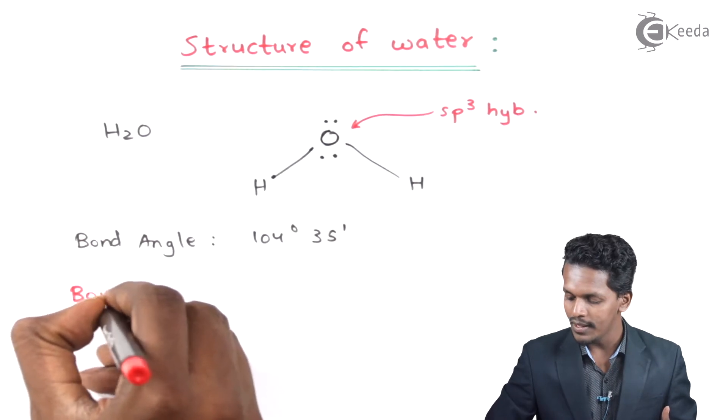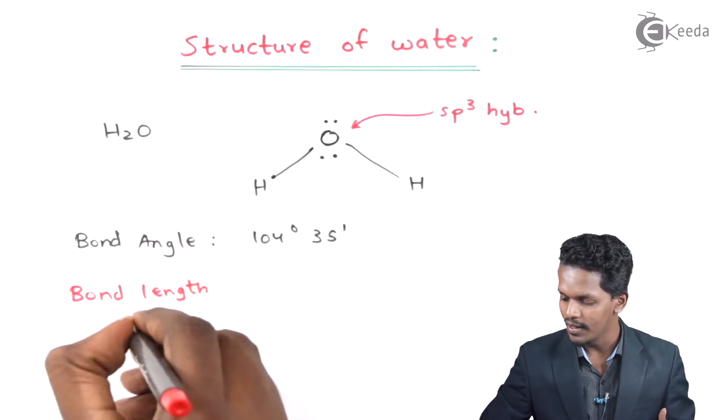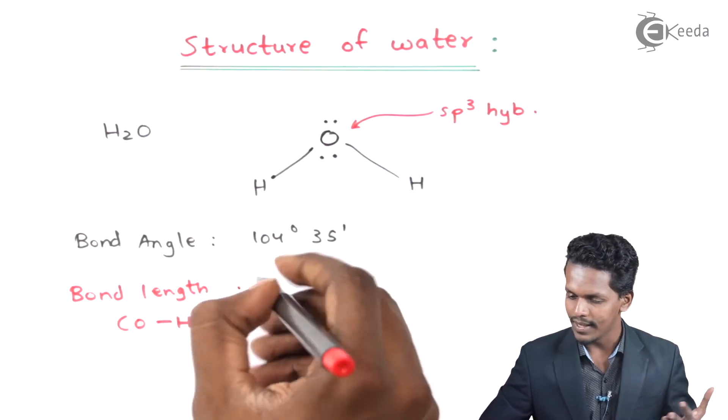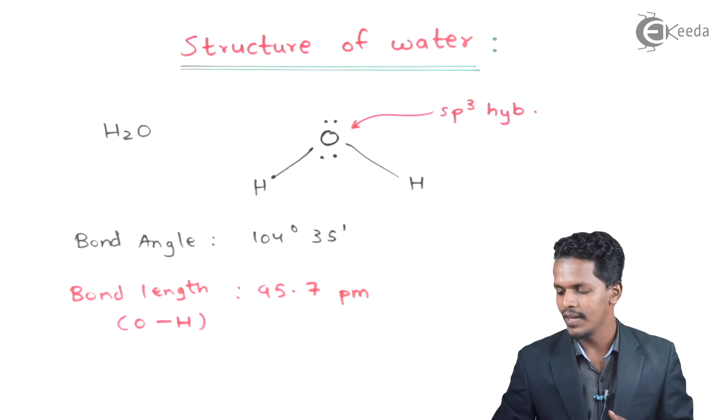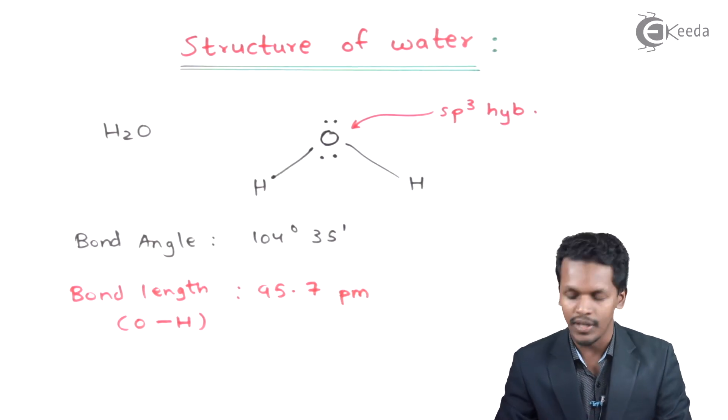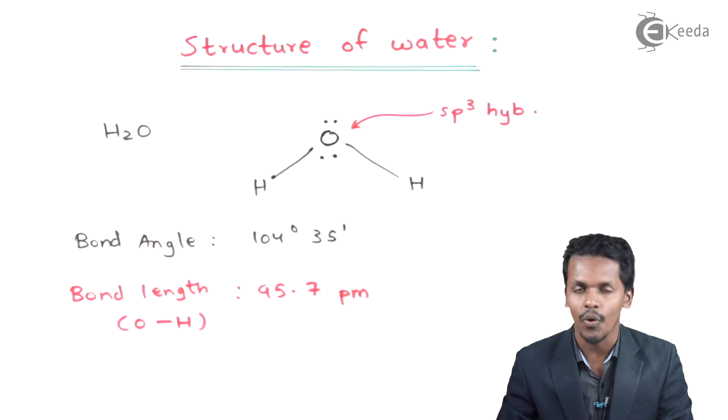The bond length between oxygen and hydrogen has been found to be 95.7 picometers. These are certain bond parameters that I have discussed for the structure of water.